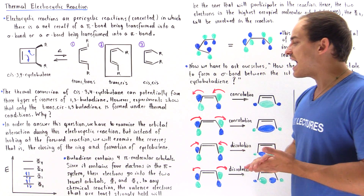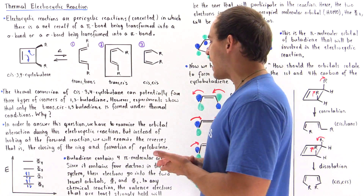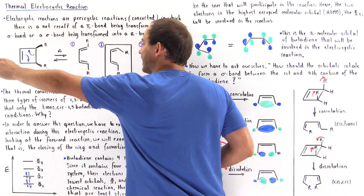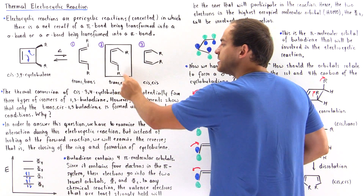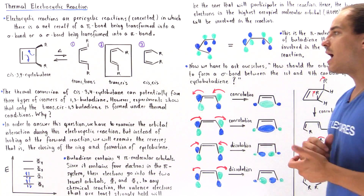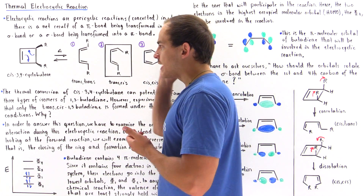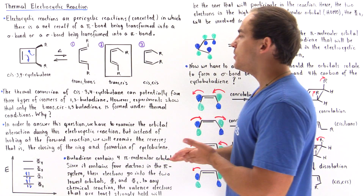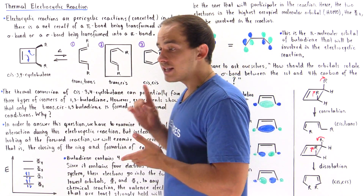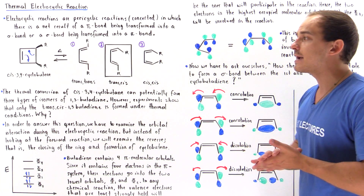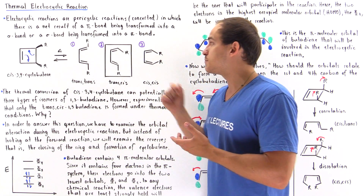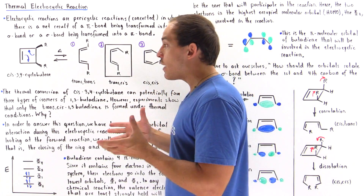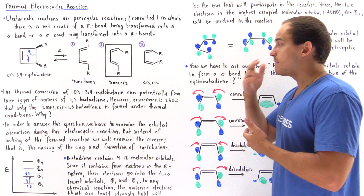In order to answer this question, we have to examine the orbital interaction during this electrocyclic reaction. Instead of going from cyclobutene to butadiene, we're going to go in reverse — forming our cyclobutene from the trans-cis or cis-trans butadiene molecule. The next question is: what are the pi molecular orbitals of this 1,3-butadiene molecule? We already discussed the molecular orbitals of 1,3-butadiene in a previous lecture. I'll assume you know how to form all four pi molecular orbitals of 1,3-butadiene.